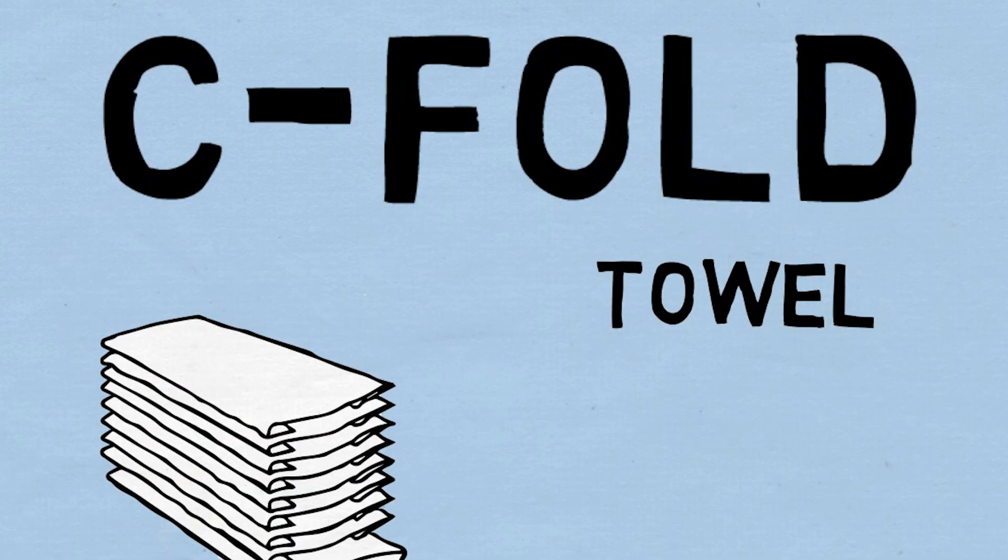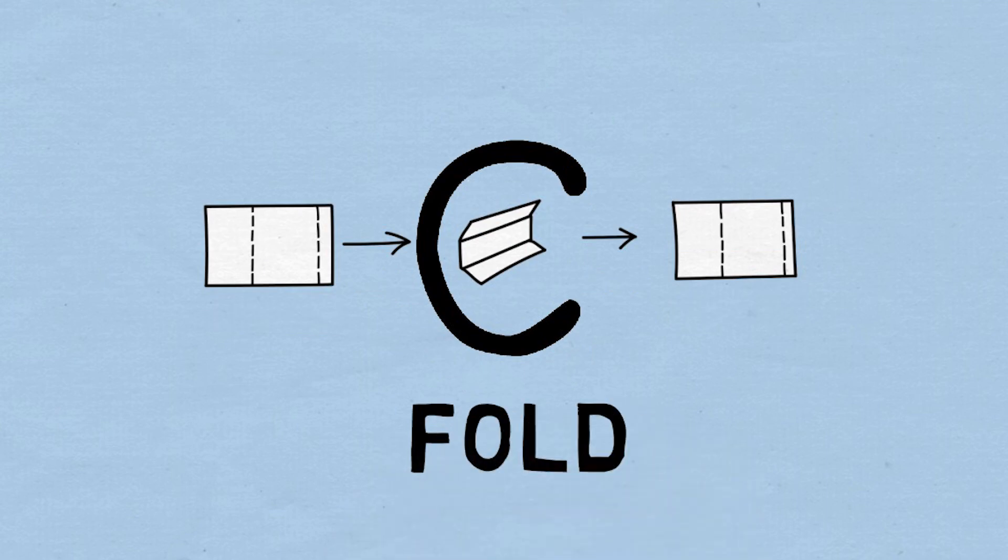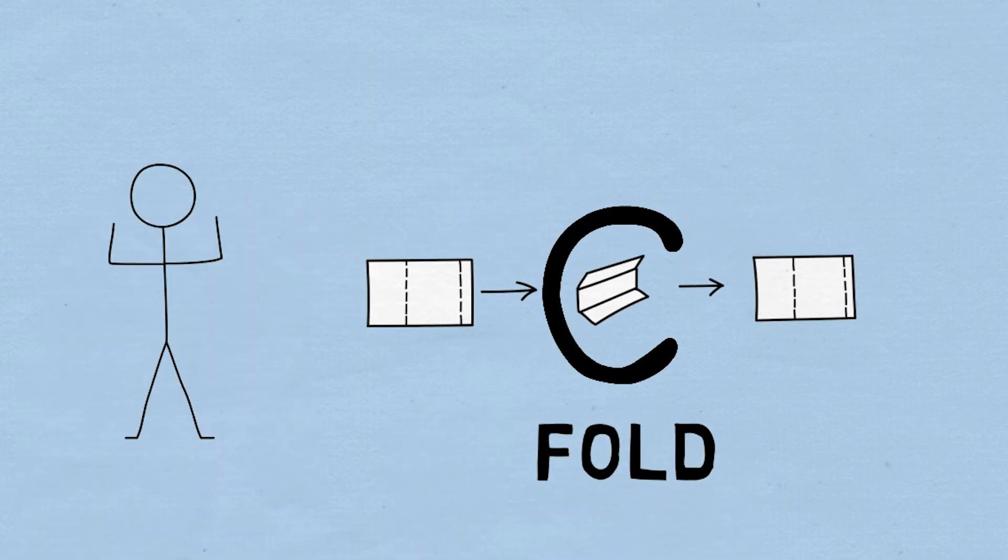There is one more common type of fold, the C-fold. Why do you think it's called the C-fold? Yep. It looks like a C from the side. The two ends are folded inward on this one, and it's a little bit fancier.